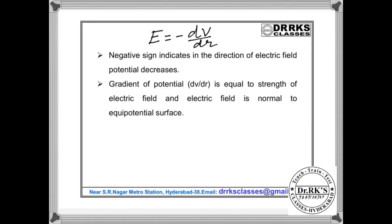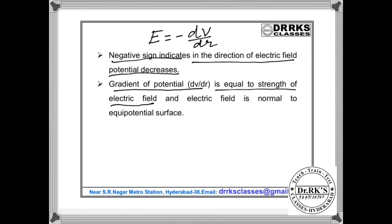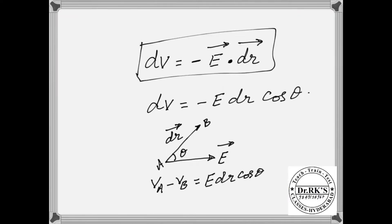The two important points are: the negative sign indicates that in the direction of electric field, potential decreases. And the gradient of potential, that is dV by dr, is equal to the strength of the electric field, and electric field is always normal to the equipotential surface. This same equation can also be written as dV equals minus E·dr, or dV equals minus E·dr·cos θ, where θ is the angle between the electric field vector and the dr vector.